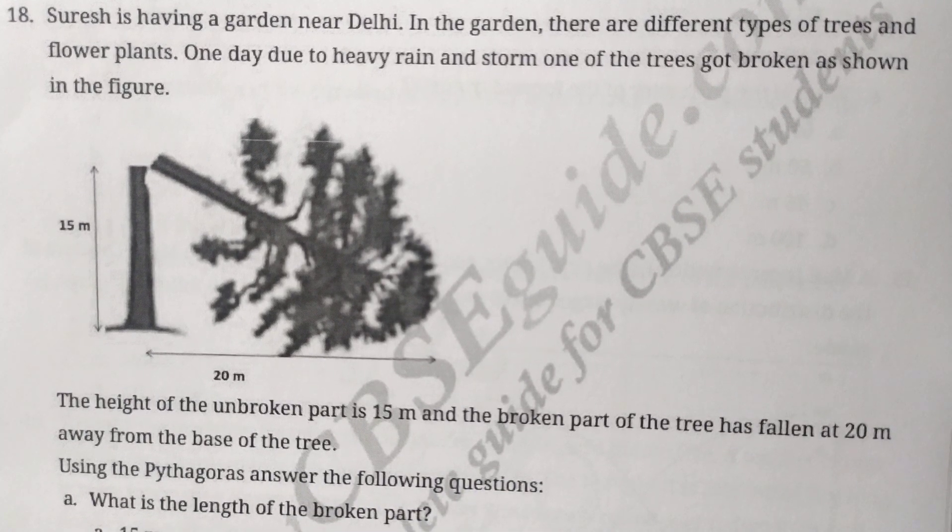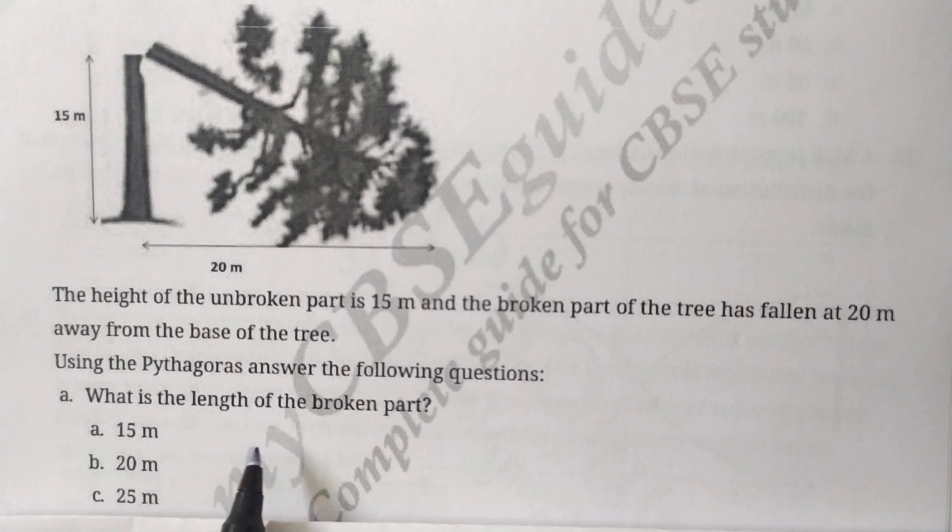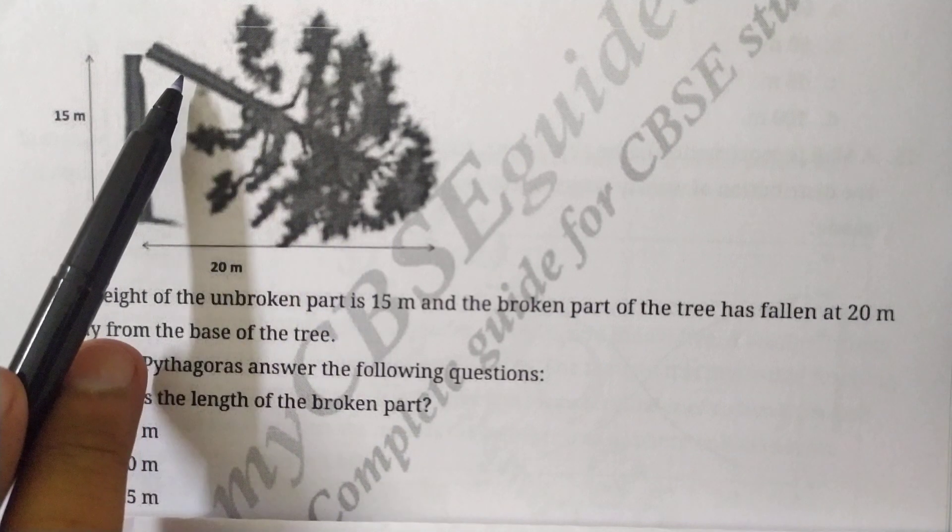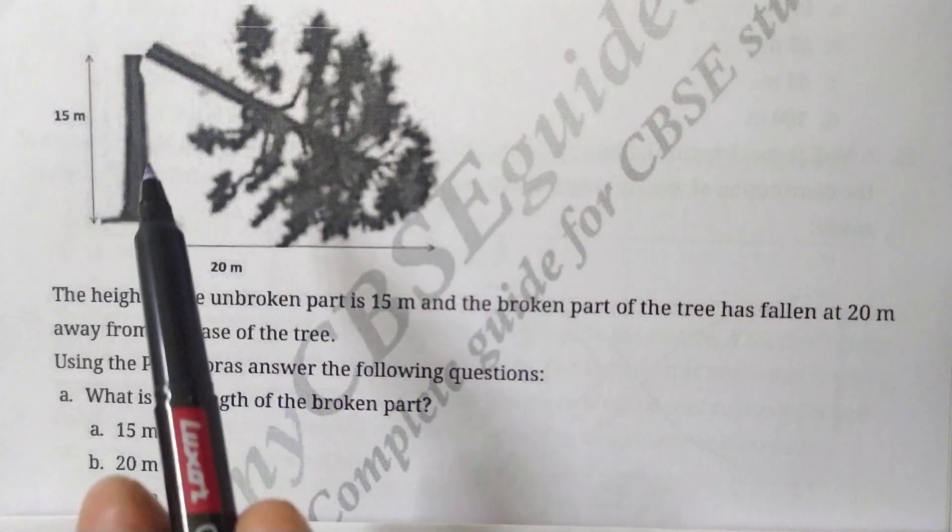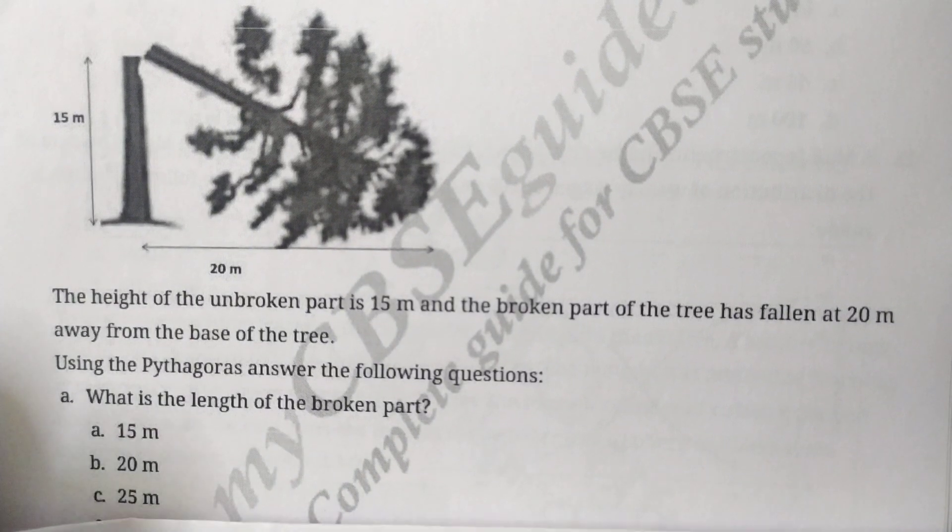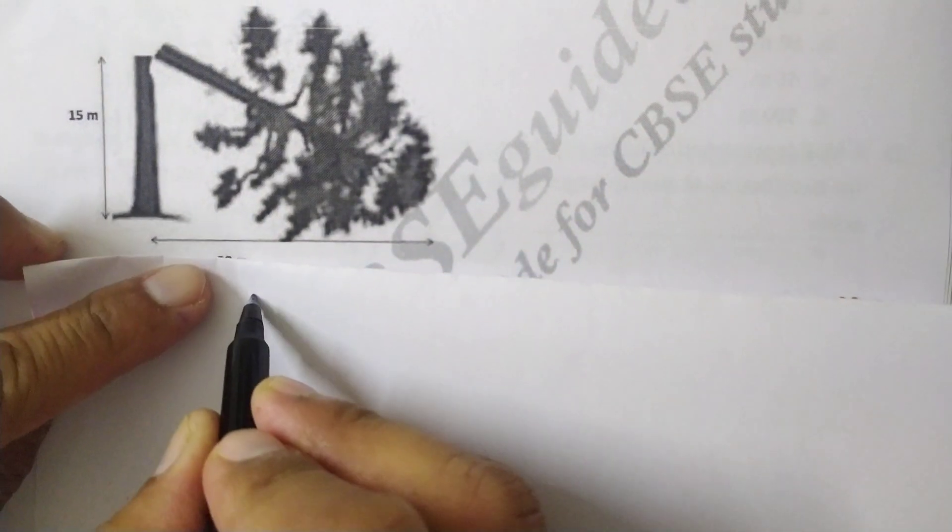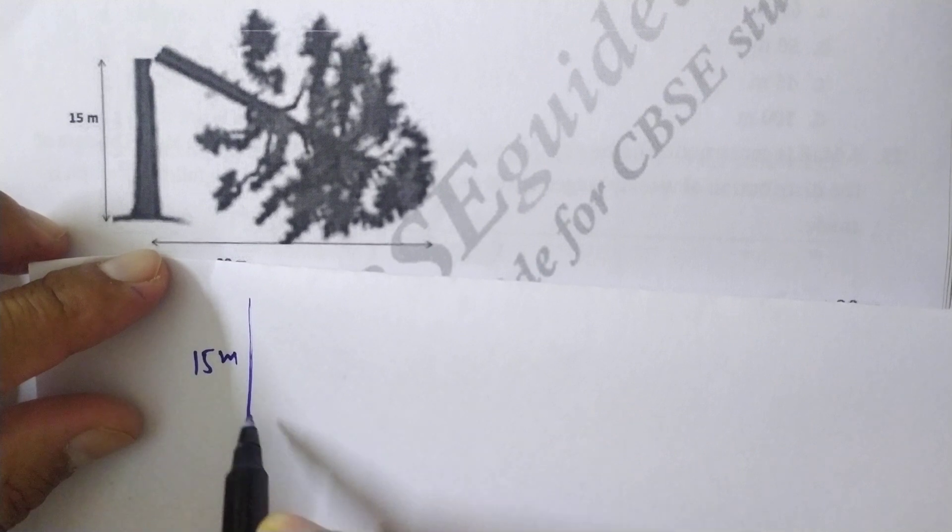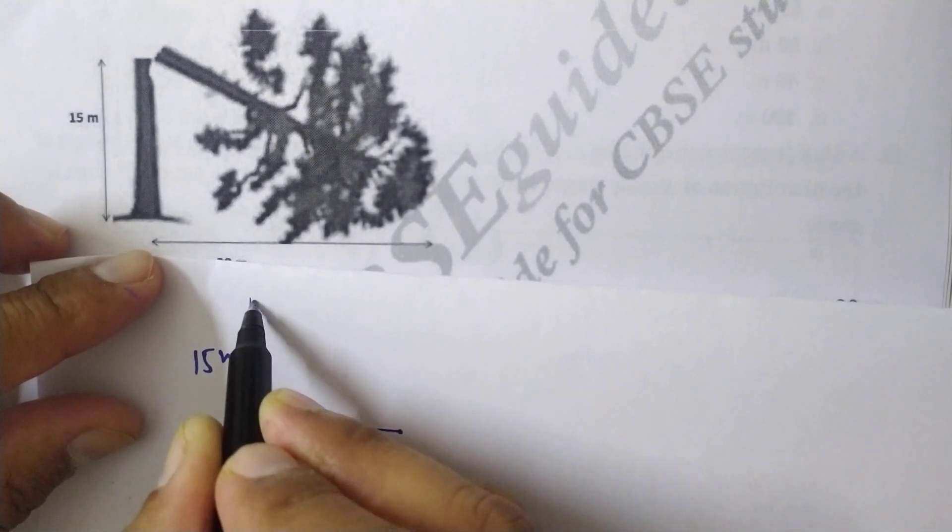The first question is what is the length of the broken part? Let's find out this distance by using Pythagoras theorem. This is 15 meters and this is 20 meters, so we need to find out this broken part.